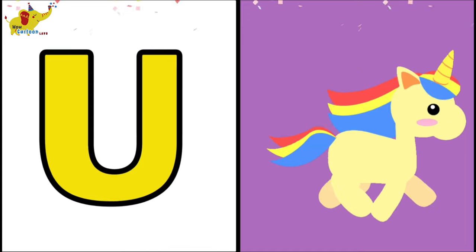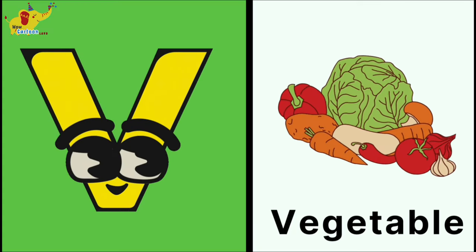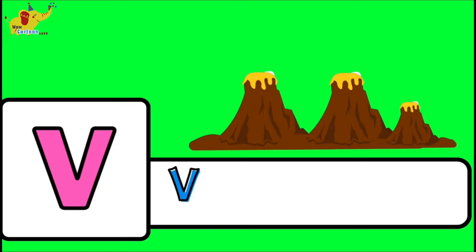U for umbrella, U for unicorn, V for vegetable, V for volcano.